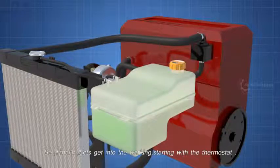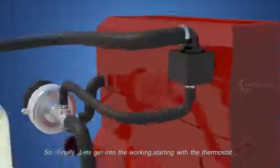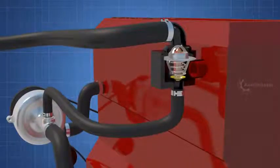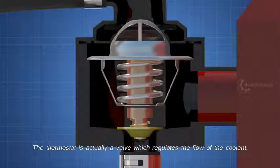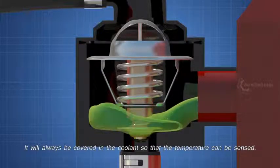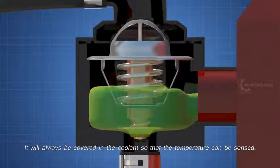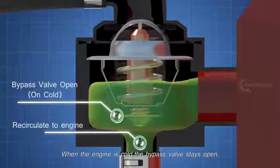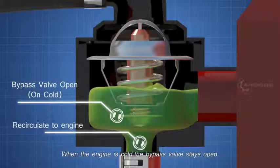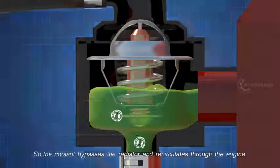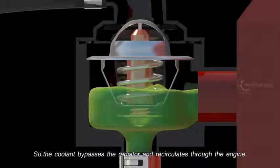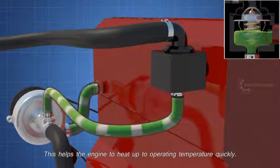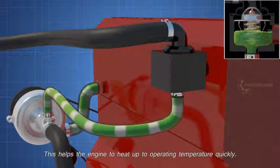So, finally, let's get into the working, starting with the thermostat. The thermostat is actually a valve which regulates the flow of the coolant. It will always be covered in the coolant so that the temperature can be sensed. Let's start the operation from a cold engine. When the engine is cold, the bypass valve stays open. So the coolant bypasses the radiator and recirculates through the engine. This helps the engine to heat up to operating temperature quickly.